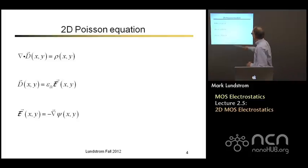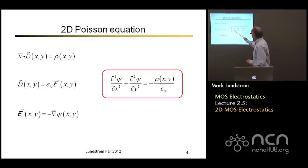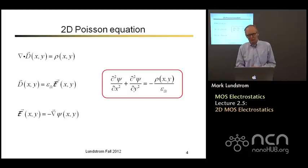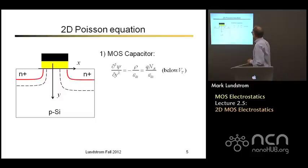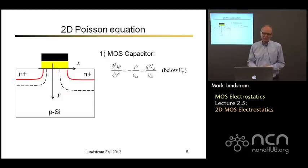Now to understand this, we need to solve the 2D Poisson equation, either in the form divergence of D equals rho, where D is epsilon times the electric field and the electric field is minus gradient of the electrostatic potential. So we could rewrite our two dimensional Poisson equation this way: del squared psi equals minus charge in coulombs per cubic centimeter divided by dielectric constant. When we did the 1D case, we just considered variations normal to the channel, so we only had del squared psi dy squared. If we compute that below threshold, we can get analytical expressions using the depletion approximation.